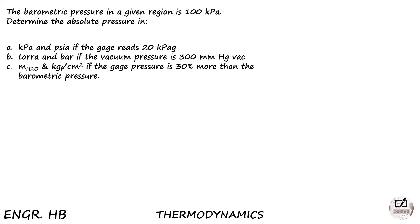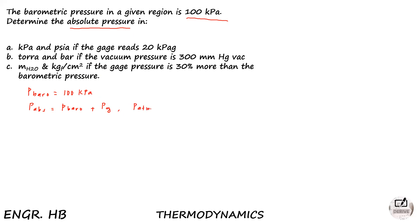The barometric pressure in the given region is 100 kPa. When asked for absolute pressure, we know that absolute pressure is equal to barometric pressure plus gauge pressure. If no barometric pressure is given, we use atmospheric pressure. But since barometric pressure is given as 100 kPa, we can find the answer right away.